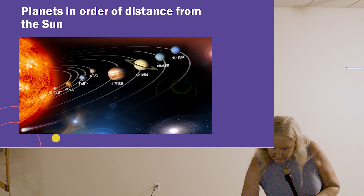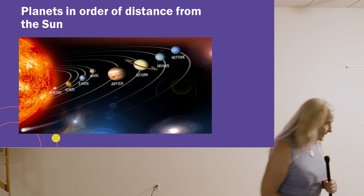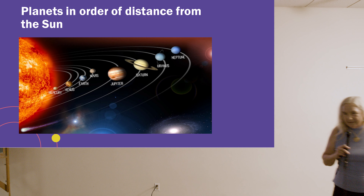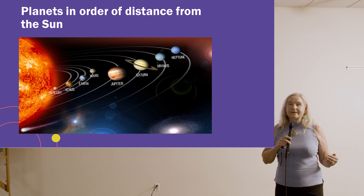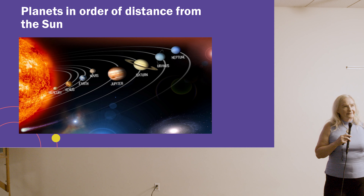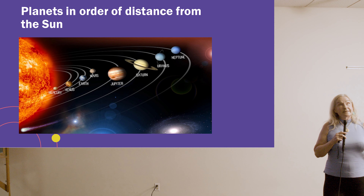Before we get into the retrogrades, let's look at the attributes of each planet. When you think about Mercury, what do you think of? Communication, intellect, the mind, learning, gathering and exchanging information, writing, short travel — Mercury rules both Virgo and Gemini.